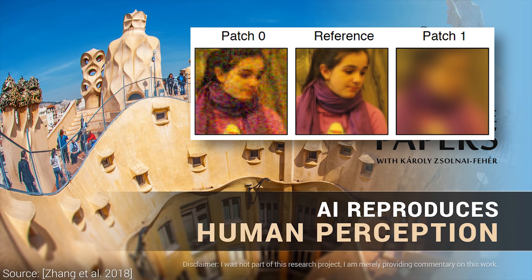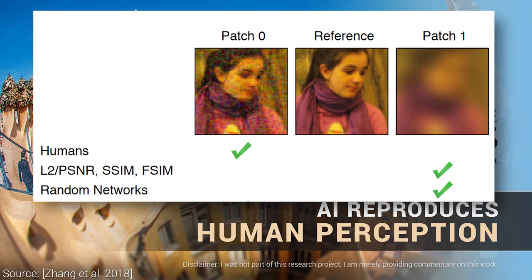What about this comparison? Which image is closer to the reference — the noisy or the blurry one? Most humans say that the noisy image is more similar, perhaps because with enough patience, one could remove all the noise pixel by pixel and get back the reference image, but in the blurry image, lots of features are permanently lost. Again, the classical error metrics think otherwise. Not good.